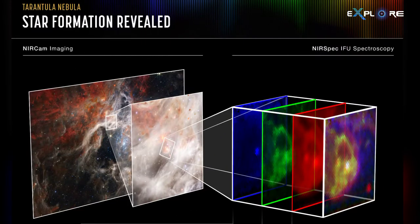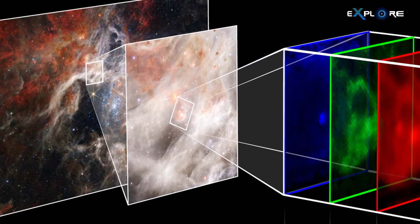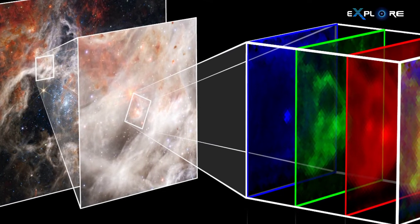Webb's near-infrared spectrograph or NIRSpec caught one very young star doing just that. Astronomers previously thought this star might be a bit older and already in the process of clearing out a bubble around itself.